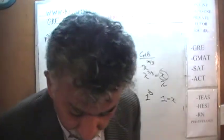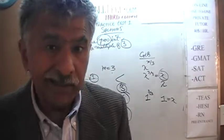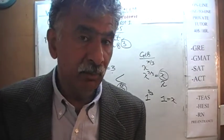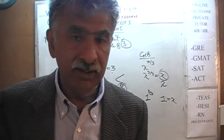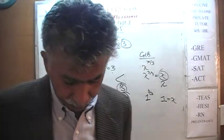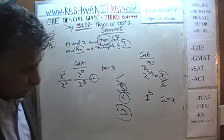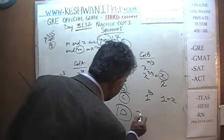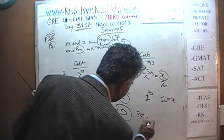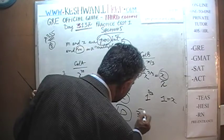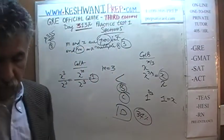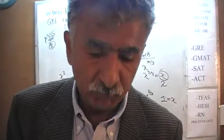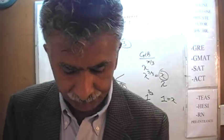We could sit here and plug in different values of X and M all day, but it's not necessary. The answer is D. The percentile: almost two-thirds of the people got it wrong — only 34% had luck with it.